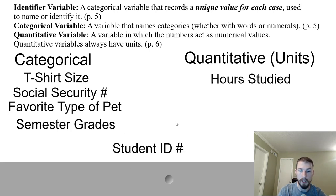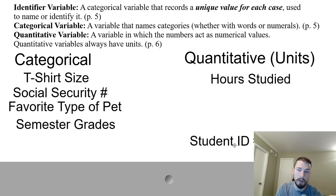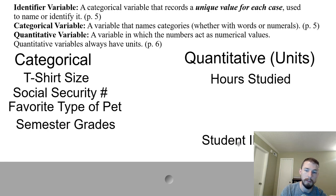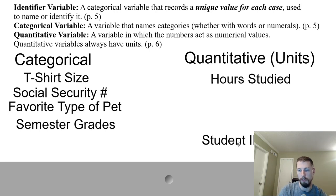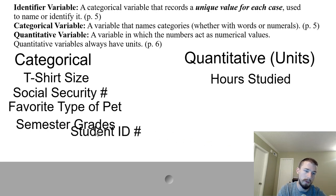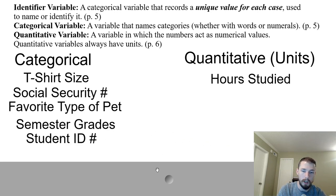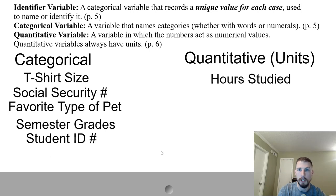Student ID is a number, which might suggest it should be quantitative. But your student ID doesn't behave like most numbers — it has no units, and a higher or lower student ID number doesn't mean anything unless it were sequential based on when you joined the district. So it's an identifier variable — a type of categorical variable where we group all the same student ID numbers together because it would be the same student.